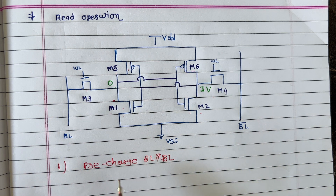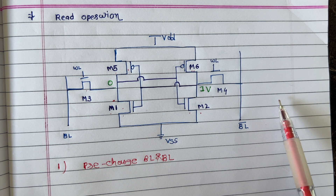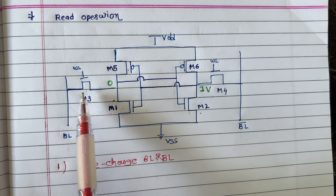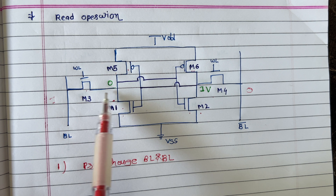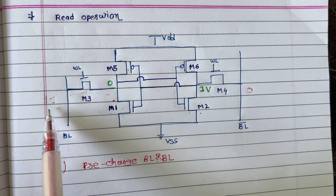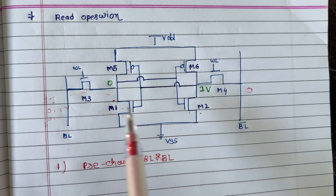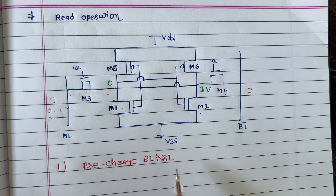In READ operation, the first step is to pre-charge bitline and bitline bar. Why are we doing pre-charge bitline and bitline bar? This is an important interview question: why we are doing pre-charge before READ or WRITE operation? In an SRAM array, we have N number of bitlines and bitline bars. During the OFF or idle condition, there is some leakage. If bitline has a 1 and bitline bar has a 0, during leakage there might be some leakage through the NMOS, so it might become 0.8 or 0.7. To ensure bitline and bitline bar are both 1, we pre-charge them to 1.